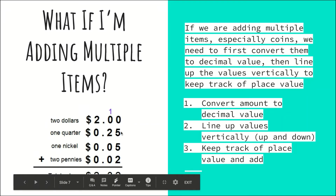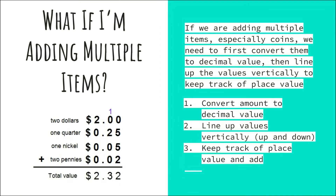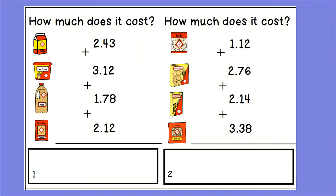Adding vertically: zero plus five is five, five plus five is ten, two plus ten is twelve — so I need to regroup. Bring the two down and carry the one over to the tenths place. One plus zero is one, one plus two is three — bring three down. Then bring down the decimal point, and bring down the two. The total value of all these items is two dollars and thirty-two cents.